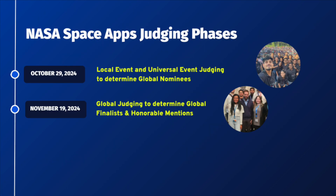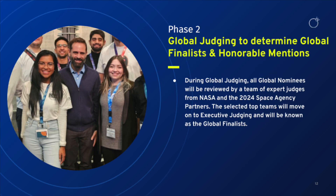Phase two is determining global finalists and honorable mentions. During global judging, all global nominees will be reviewed by a team of subject matter experts from NASA and the 2024 Space Agency Partners. The selected top teams will move on to executive judging and will be known as the global finalists.